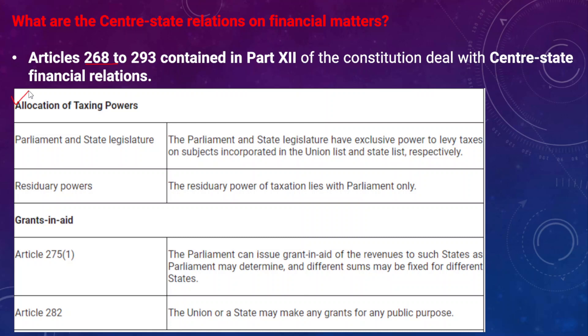Regarding allocation of taxing powers, parliament and state legislatures have exclusive powers to levy taxes on various subjects incorporated in the union list and the state list respectively. When it comes to the levy of taxes in a particular state, the state legislature is responsible. Parliament and state legislatures have their own jurisdiction with respect to the levy of taxes. Residuary powers refer to powers not found in the state list, union list, or concurrent list.